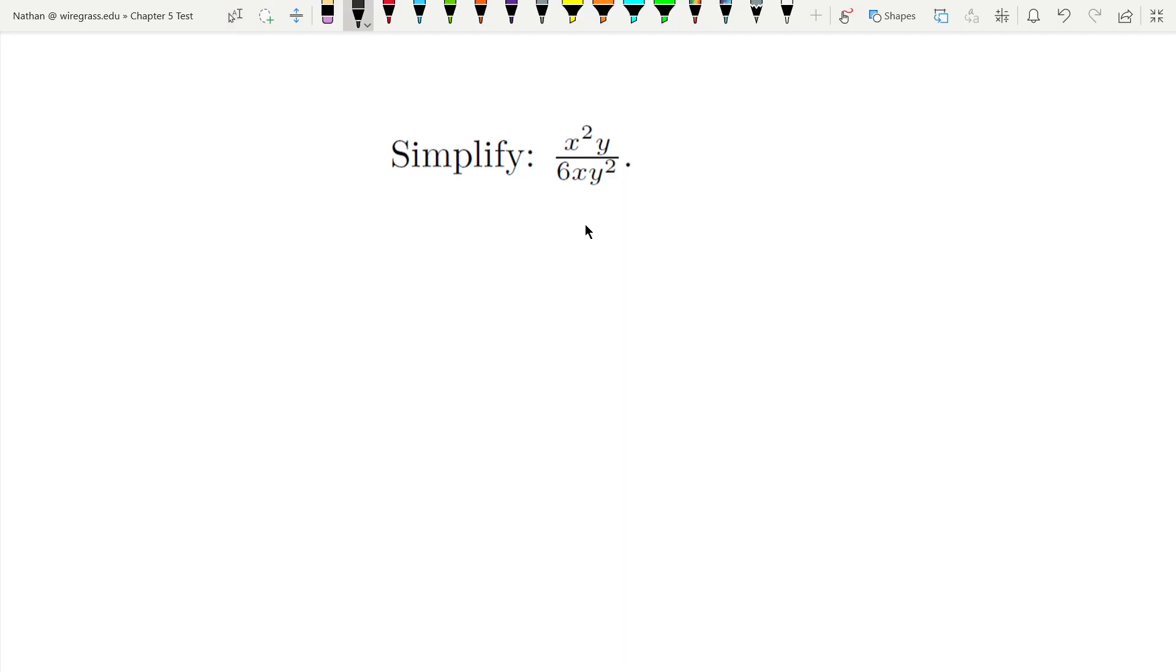All right, to simplify this we're going to separate this fraction over each unique base, so this is going to be the numbers, the x's, and the y's. We have a one in the numerator so there's no number there. So this is the same thing as one over six times x squared over x times y over y squared.